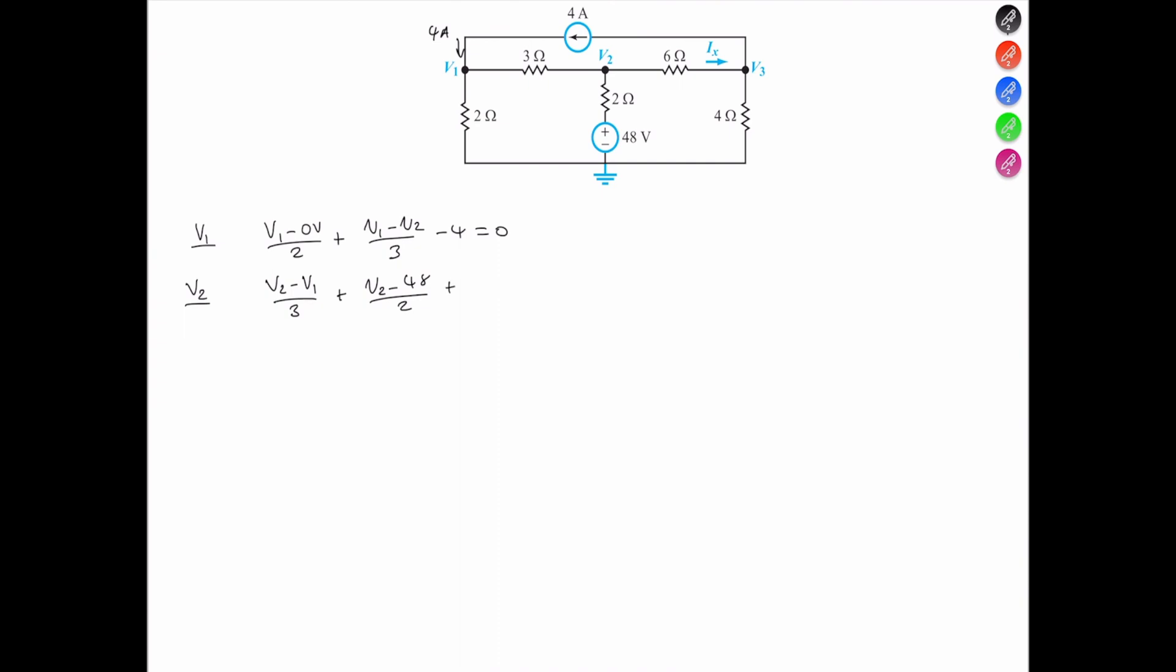Then we take V2 with reference to V3, so V2 minus V3, all over the 6-ohms, and that's equal to 0.